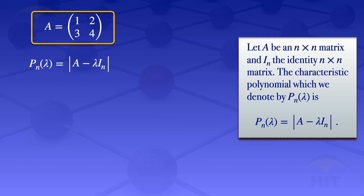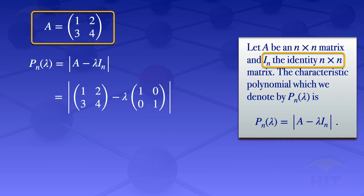Our matrix A is the two by two matrix with elements one, two, three, four. Our identity matrix must be the same size as the given matrix A, so in this case our identity matrix is the two by two matrix with ones on the main diagonal. Substituting A and I_n into the formula for P_n of lambda, we get the determinant of the matrix one, two, three, four minus lambda multiplied by the identity matrix one, zero, zero, one.